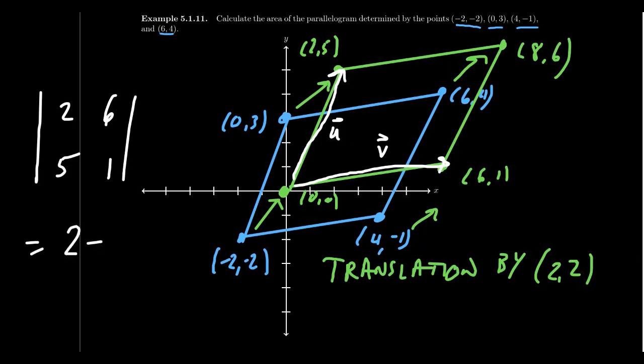we get 2 minus 30, which gives us a negative 28. But as area should be positive, we really needed to take absolute values the whole way. And so we're going to get 28 square units of area for this parallelogram right here. Now, admittedly, in order to calculate the area, we don't have to draw the picture. I mostly wanted to draw the picture to kind of illustrate geometrically what we're doing. But this determinant is what we needed to do to calculate the area of this parallelogram.